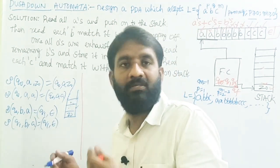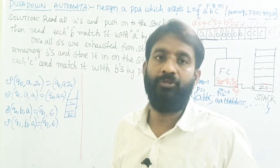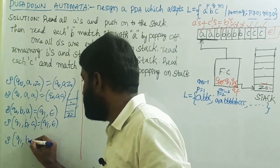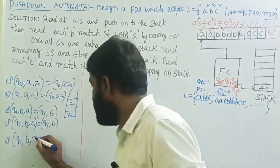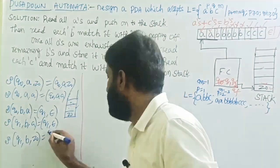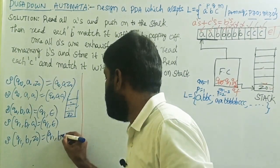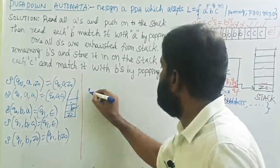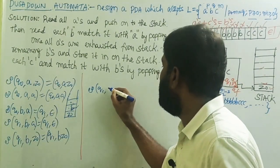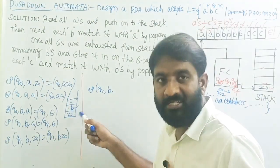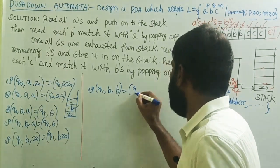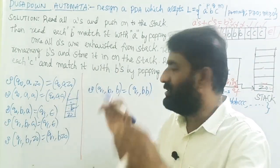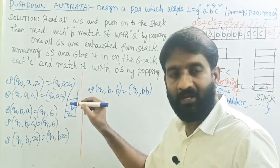If there are more B's after A is exhausted, we need additional transitions. Transition of Q1 with input symbol B and top of stack Z-naught equals Q1 with B Z-naught — add B onto the stack. If there are more B's and top of stack is now B, transition of Q1 with input B and top of stack B equals Q1 with B B — add B onto the stack. For any additional B's, keep adding B onto the stack.